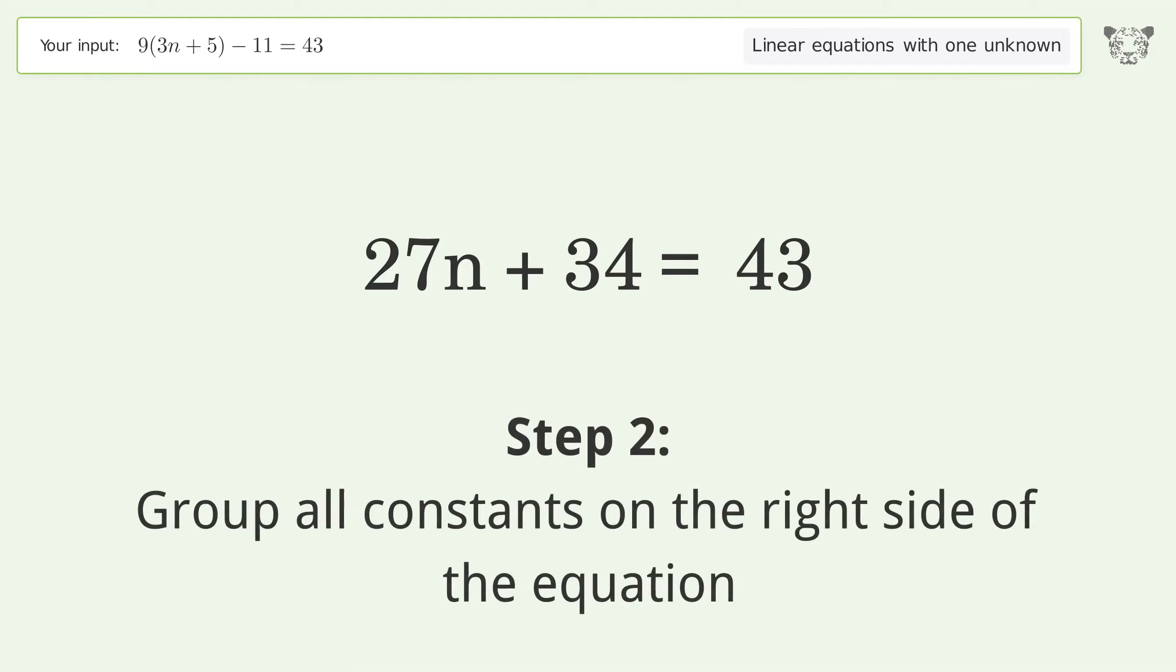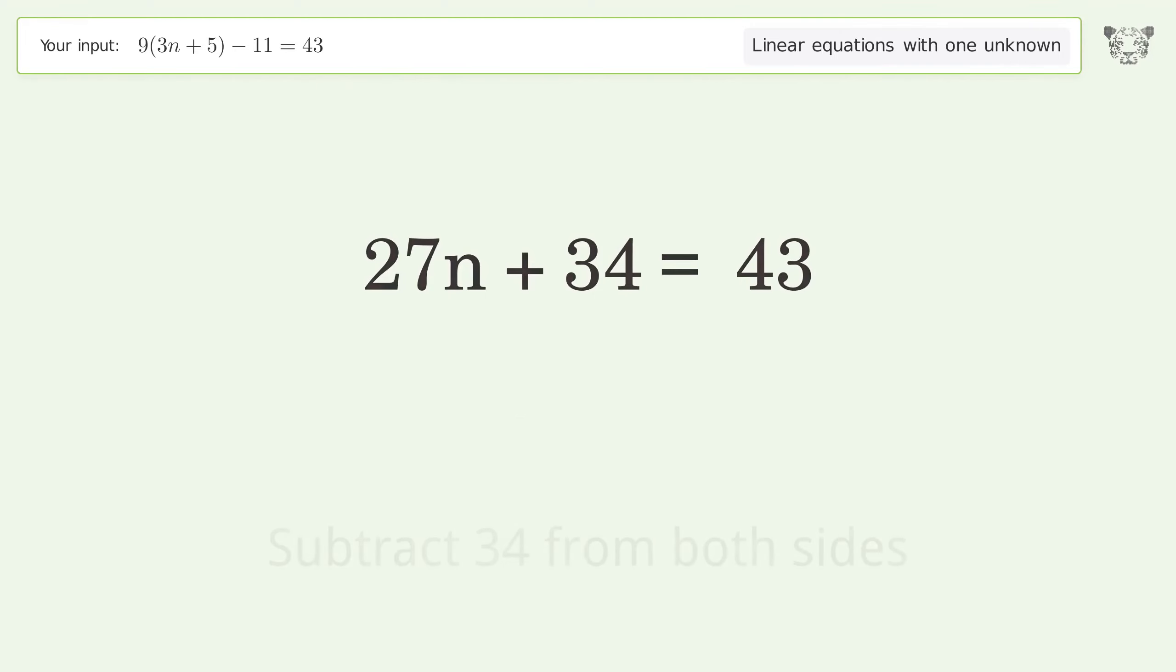Group all constants on the right side of the equation. Subtract 34 from both sides. Simplify the arithmetic.